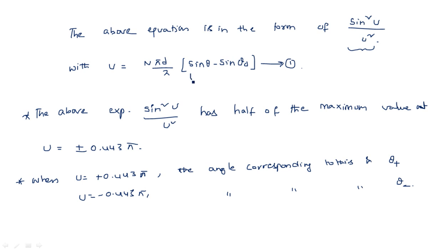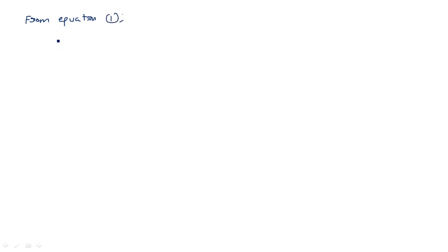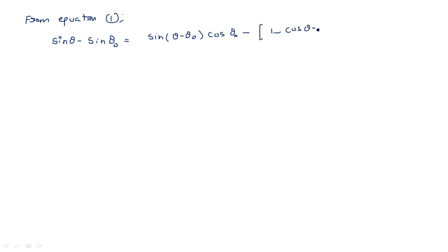From equation 1, sin θ − sin θ₀ can be rewritten using the expansion: sin θ − sin θ₀ = sin(θ − θ₀)·cos θ₀ − (1 − cos(θ − θ₀))·sin θ₀.